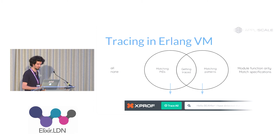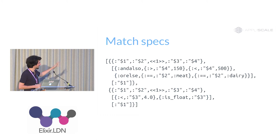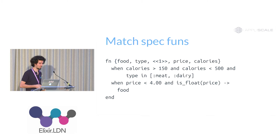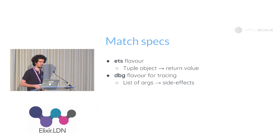So what are match specs? They are these rather complex terms — hardly understandable, and if you do understand them, you probably make a mistake in them. It's better to look at them like an anonymous function that serves to filter the functions being traced. Like a function, they have a head, a guard, and a body — match spec head, match spec guards, and match spec body.